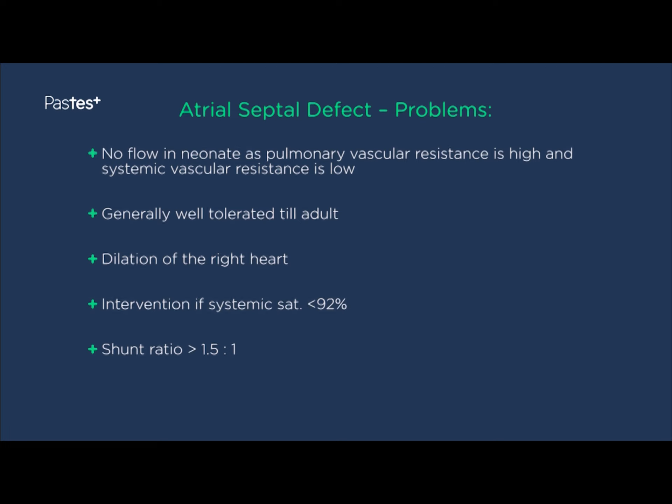Generally speaking, there's no flow in neonates as the pulmonary vascular resistance is high and systemic vascular resistance is low, so atrial septal defects are well tolerated until early adulthood. One of the main problems is the pressure loading on the right ventricle, which is a low-pressure, thin-walled structure as opposed to the much thicker-walled left ventricle. As the pressure builds up, the right heart dilates and becomes a very poor pump.